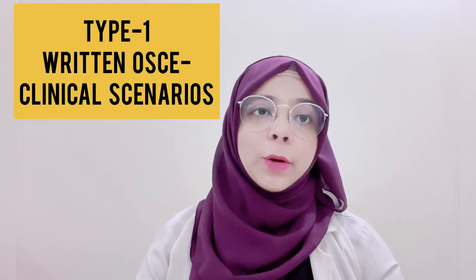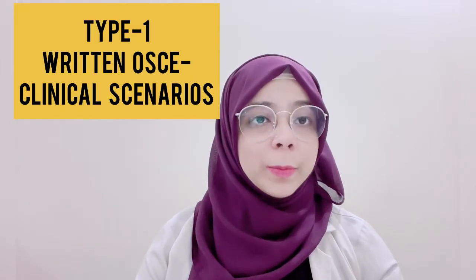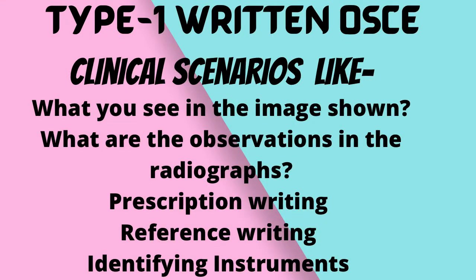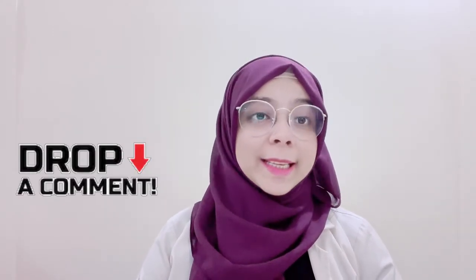Type 1 is the Written OSCE, in which you will be given clinical scenarios. These scenarios include things like what you see in an image, what observations are there in a radiograph, prescription writing, reference writing, identifying instruments, and so on. You have to be prepared for the written exam and you will not get enough time, so you have to be very quick and sharp. Comment down below if you want to know the complete syllabus and details about the clinical scenarios in the exam.